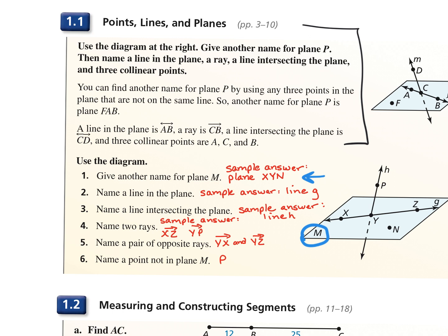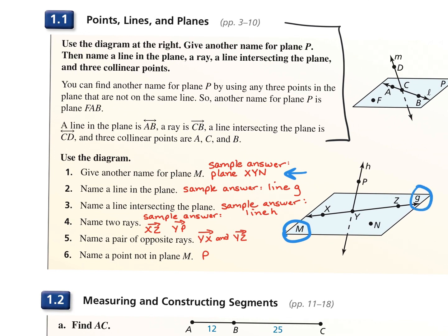For number two, when naming a line in that plane, remember you can name a line with a lowercase letter — that's what we did here with the letter G. There is no point next to it; the lowercase G is just naming that line. You can also name a line with two letters, such as XY, YZ, or XZ — pick two points on the line in that blue section.